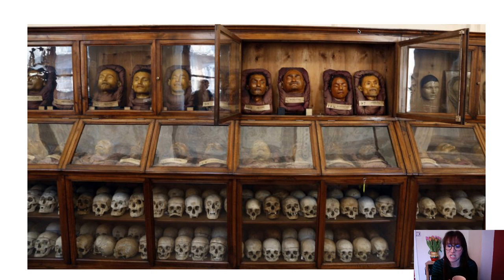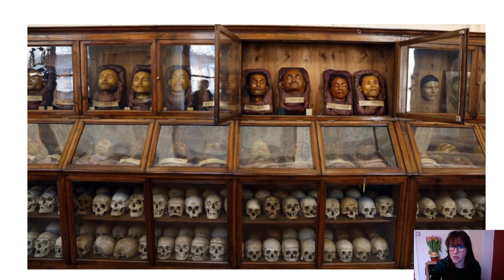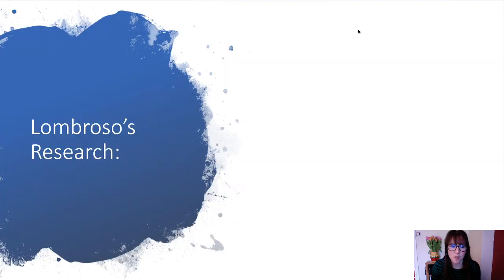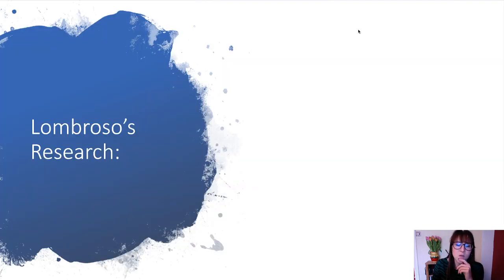Criminals are 'atavistic' — meaning they are less developed by evolution. Lombroso believed criminals look physically different; they are a separate subspecies of human, less in control and less sensitive to pain. That's why he argued they get more tattoos. He studied prisoners — examining the faces of prisoners both living and dead.